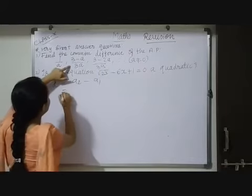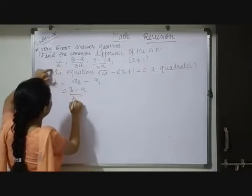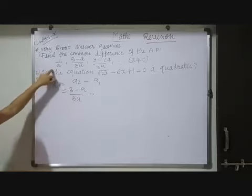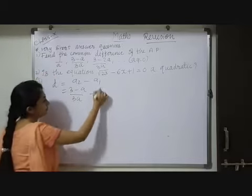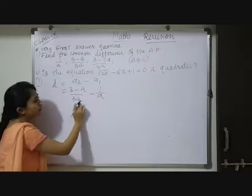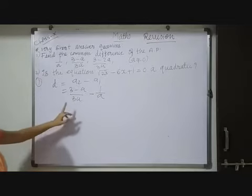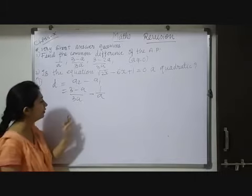So here our second term is 3 minus A upon 3A minus our first term, which is 1 upon A. Now children, observe both of its denominators. Here we are having 3A, here we have A.